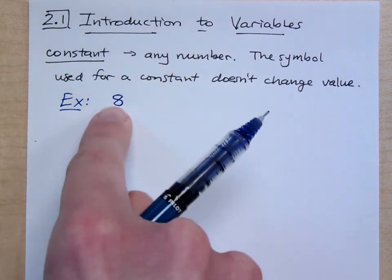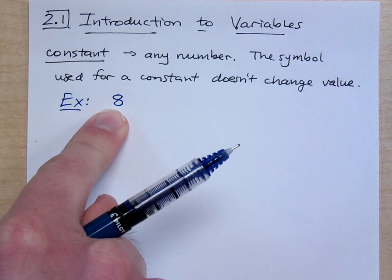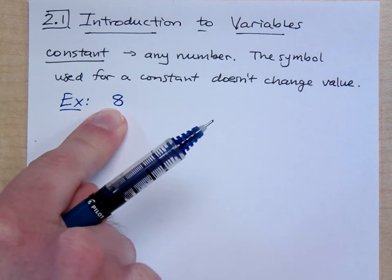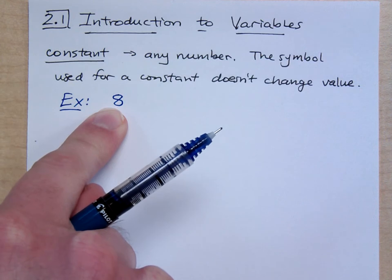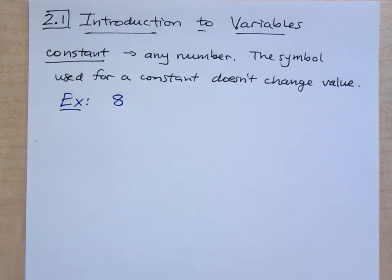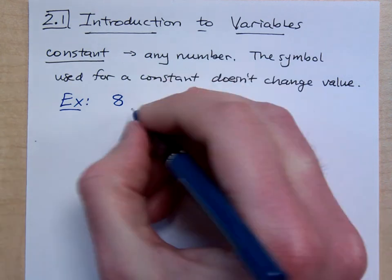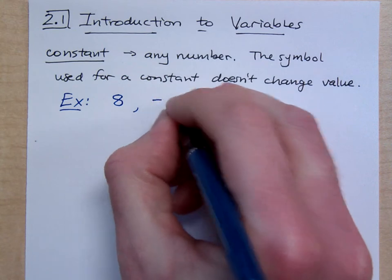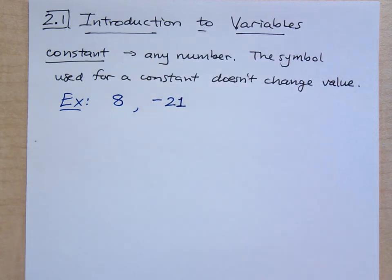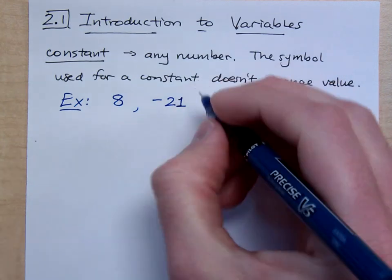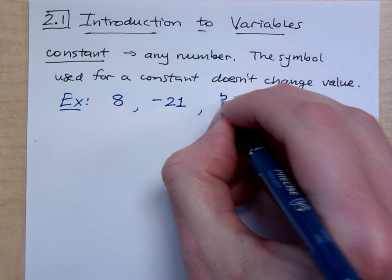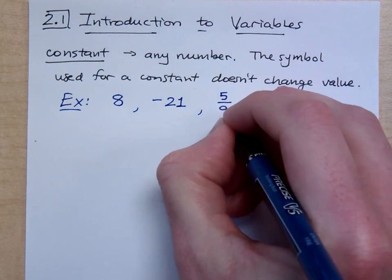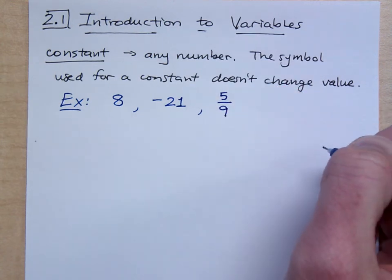If I write this symbol now, or even in 100 years, it still has the same meaning. If I look at where its location is on the number line, it's in the exact same spot. If I were to write the number negative 21, that is a constant. As we progress in this class, we'll start talking about fractions. So I could say 5 over 9 — that is a constant.